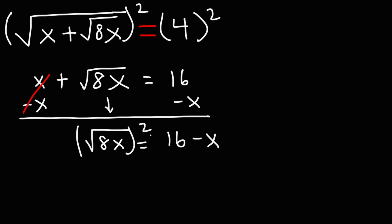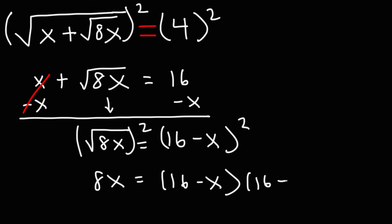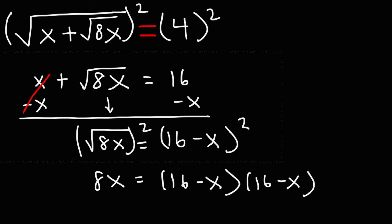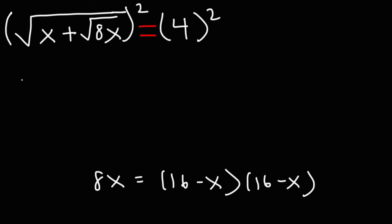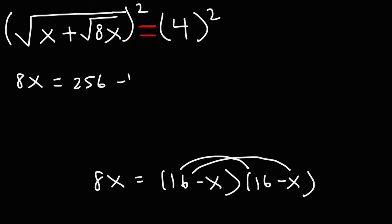So now I'm going to square both sides again. On the left, I'm just going to get 8x. On the right, I have 16 minus x written twice if we expand it. So now I'm going to FOIL. 16 times 16 is 256. This will give me negative 16x, and here we'll get another negative 16x. Negative x times negative x is positive x squared.